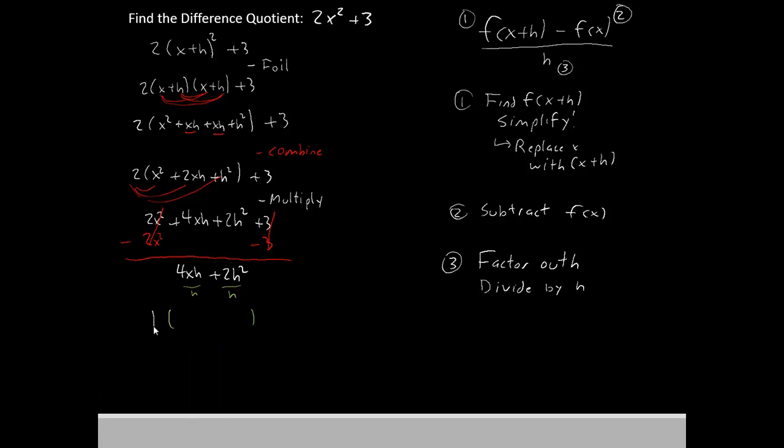All right, since my goal is to factor out h, I'm going to write h on the outside. And then we'll say 4xh divided by h is 4x, and then 2h squared divided by h gives us 2h. We'll put a little positive sign there in the middle.